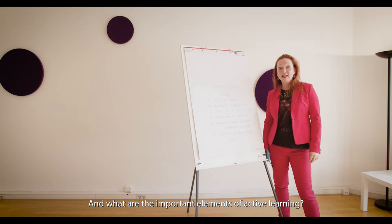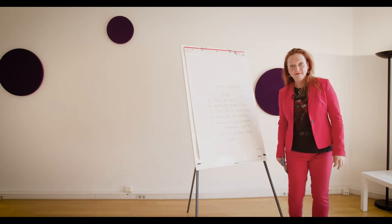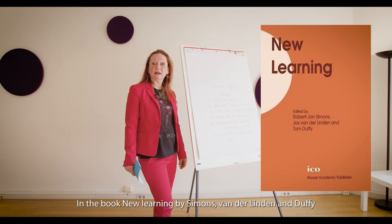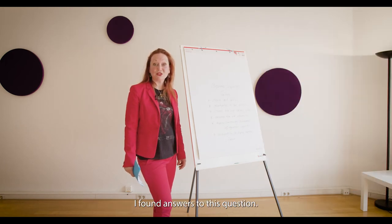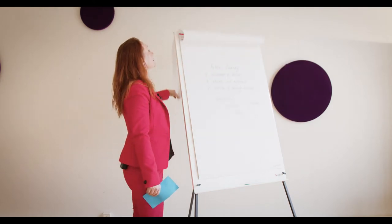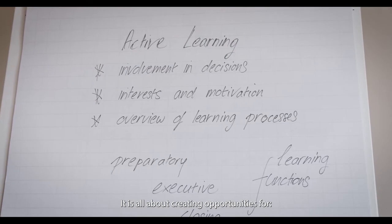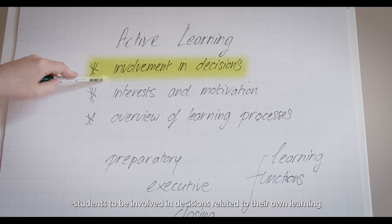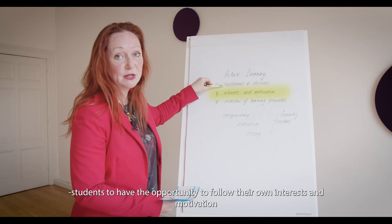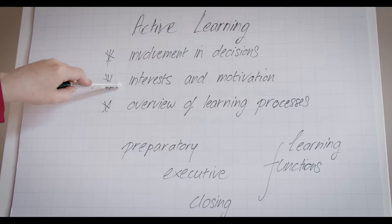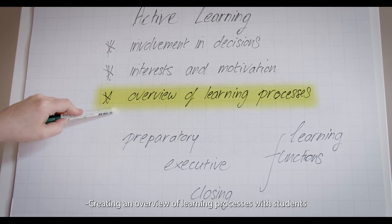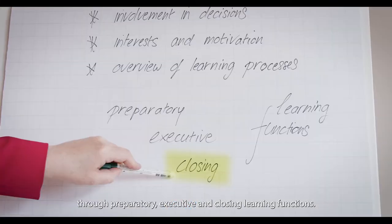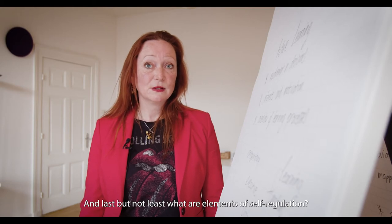What are the important elements of active learning? In the book New Learning by Simmonds, Vanderlinde and Duffy, I found answers. It is all about creating opportunities for students to be involved in decisions related to their own learning, for students to follow their own interests and motivation, and creating an overview of learning processes with students in three process stages: the preparatory, executive and closing learning functions.